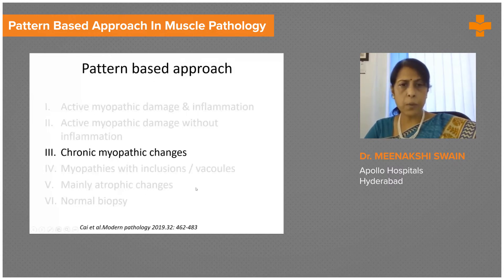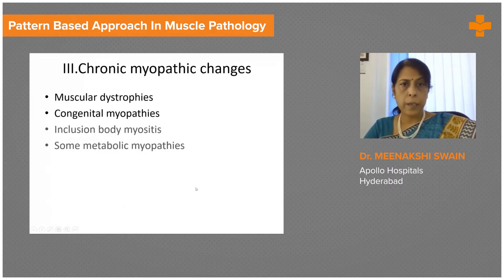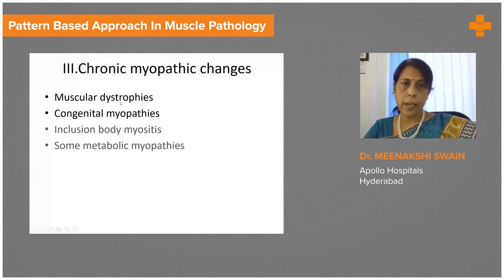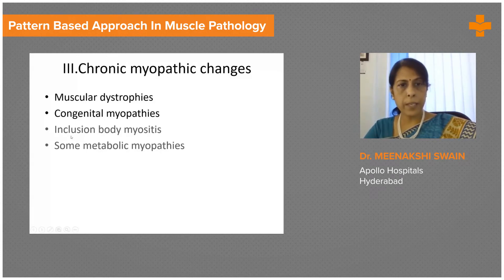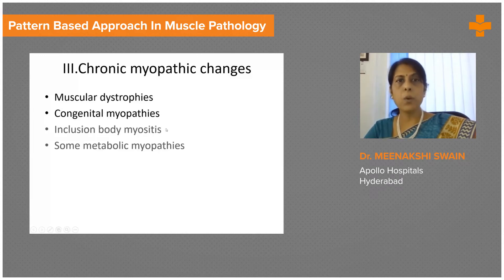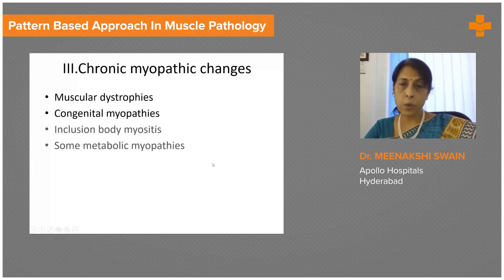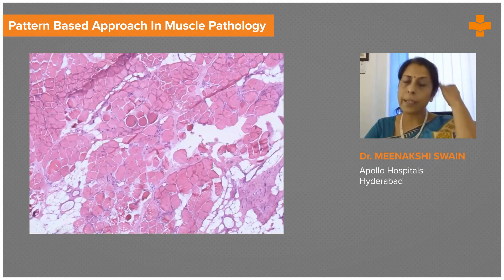Coming to the third group, which includes the chronic myopathic changes. Dystrophies typically are chronic and go on for a length of time before we see the biopsies, and congenital myopathies would also fall in this group. Certain inflammatory myopathies like inclusion body myositis could also have a chronic course. There can be considerable overlap between the groups, and close clinical correlation is extremely important to make the right diagnosis.